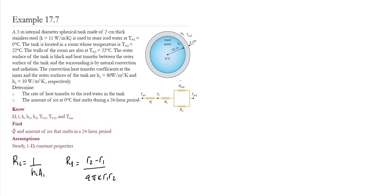Then we have the resistance due to radiation and the resistance due to convection on the outside. The radiation resistance is simply 1 over h_radiation times the outer surface area. We need to do some calculations to obtain all these resistances.